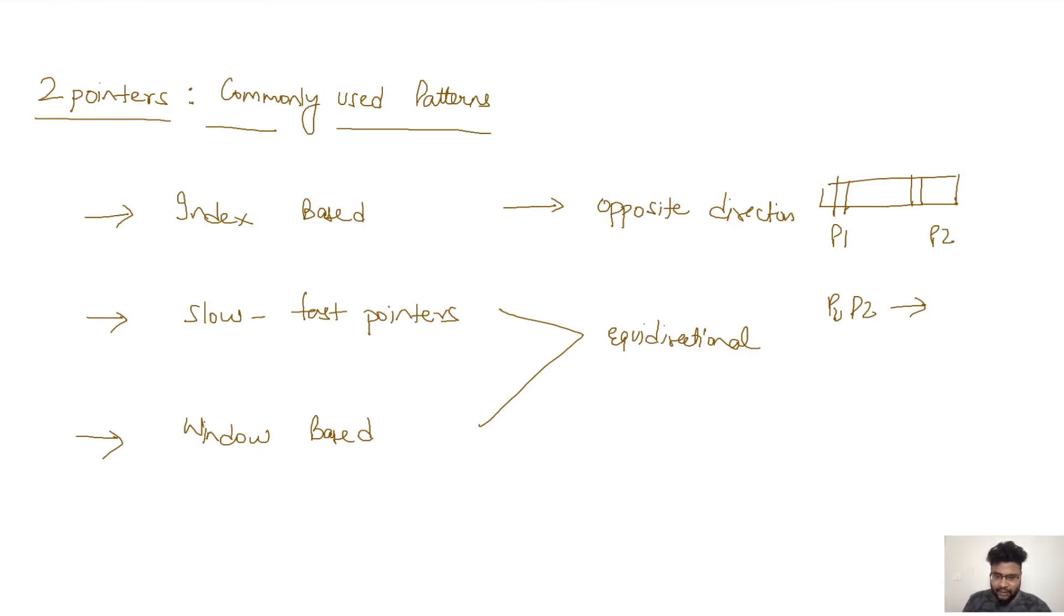And the third one which is a window based technique again requires two pointers, but here we will try to create a window. So every particular sub problem which we are trying to solve is going to be a sub array of this particular array. One of the pointers will help us close the window and one of the pointers will help us open the window, further expand the size of the window, and the other one will actually reduce the size of the window.